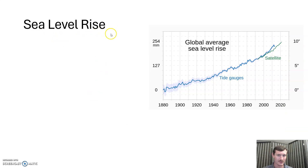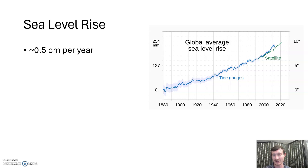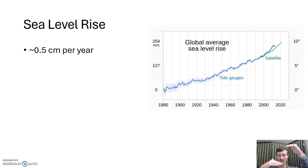Sea level rise — something on the order of half a centimeter a year, but it really varies. Certain places are going to be less, certain places are going to be more. There are a number of reasons for this, but the biggest one is actually going to be glacial rebound. When we had our ice age, there were big ice sheets on all the continents pressing down. Those have receded, and parts of the continent are bouncing back up, but parts of the continent were actually bulged up by the ice sheet, so now that the ice sheet is removed, they're coming back down. This is happening specifically on the East Coast, in New Jersey. Sea level rise there is more than 0.5 centimeters per year — way more in some places than others.